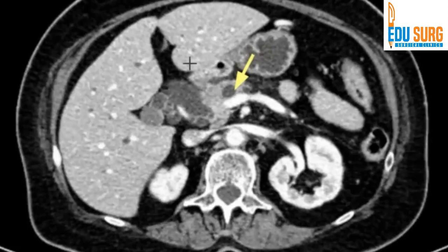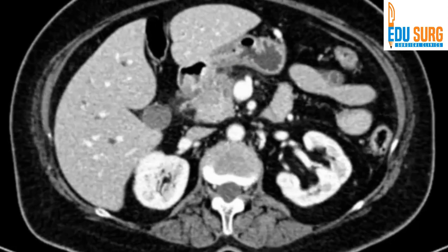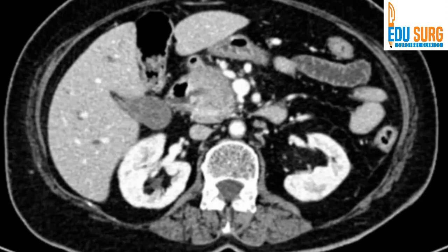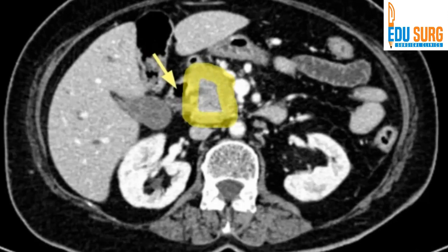What the arrow is pointing towards is the dilated pancreatic duct and the dilated common bile duct. This is known as the double duct sign, which is pathognomonic of a pancreatic head cancer. You can appreciate the double duct sign, and that part where the ducts have disappeared is the tumor — the mass being highlighted in the head of the pancreas as well as extending into the uncinate process. The arrow is pointing towards the duodenum. So this case is a case of pancreatic head cancer.